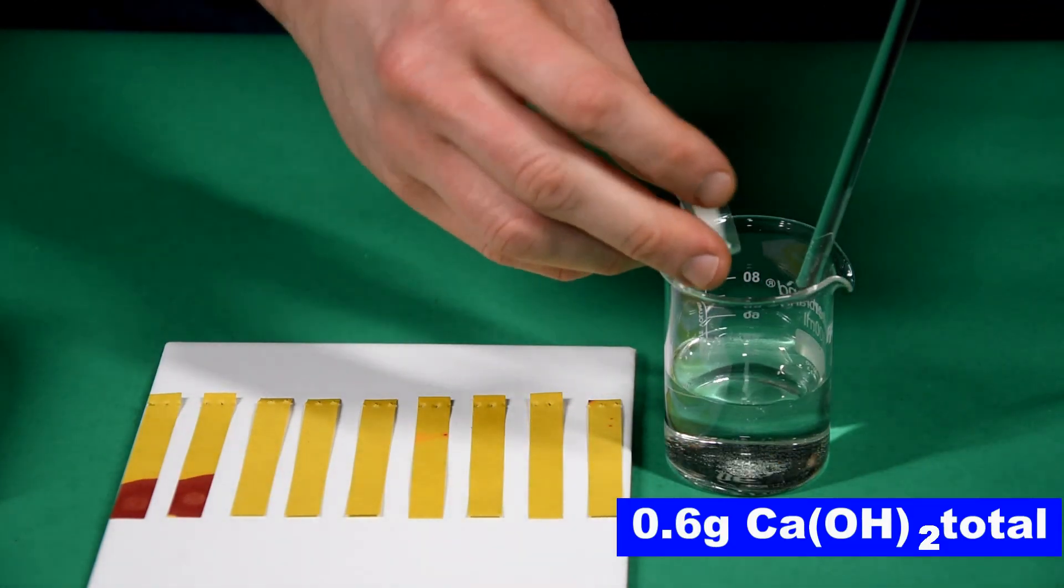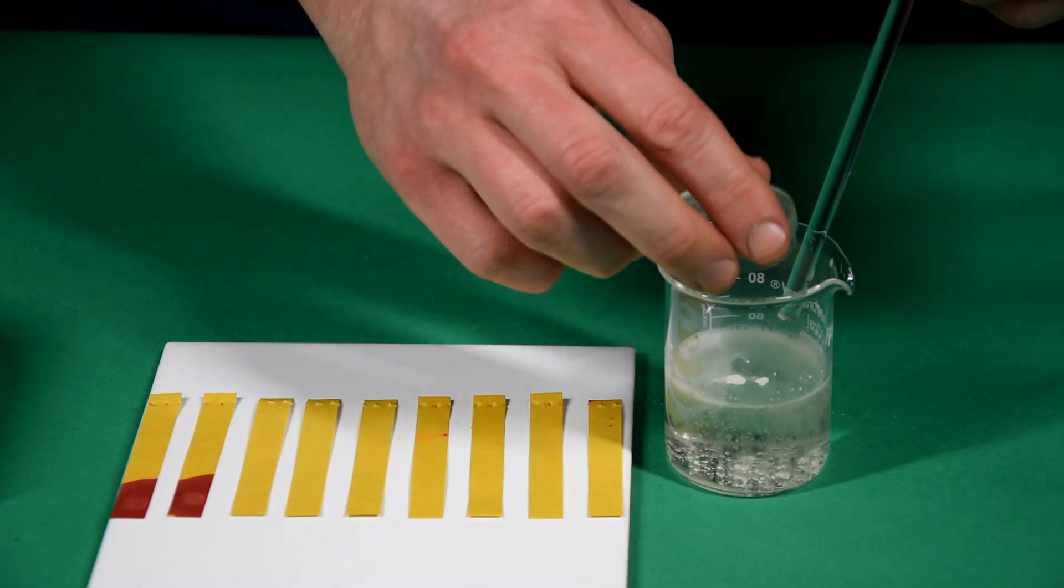The red color indicates high levels of hydrogen ions and a low pH. Now add another 0.3 grams, that's 0.6 grams in total, and then stir.